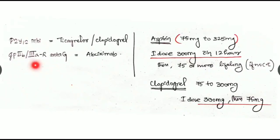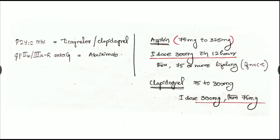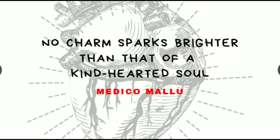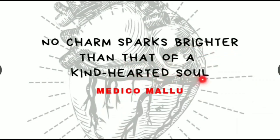The example of GP2b3a receptor antagonist is abciximab, and the ticagrelor or clopidogrel is a P2Y12 inhibitor. This is the end of our session. Keep this in mind: no charm sparks brighter than that of a kind-hearted soul, and we doctors must be good idols of kind-heartedness.